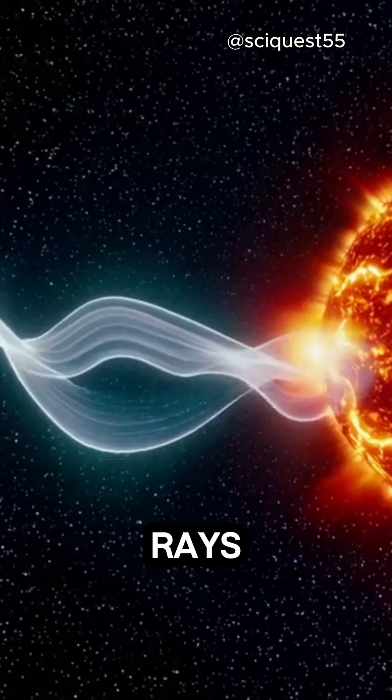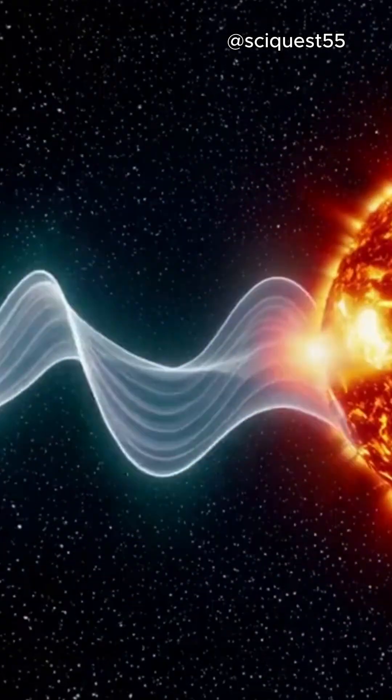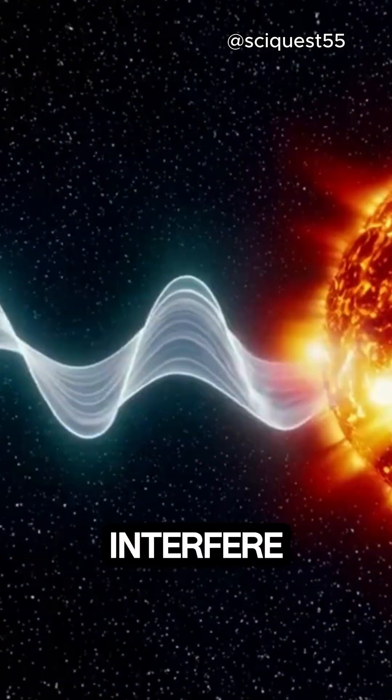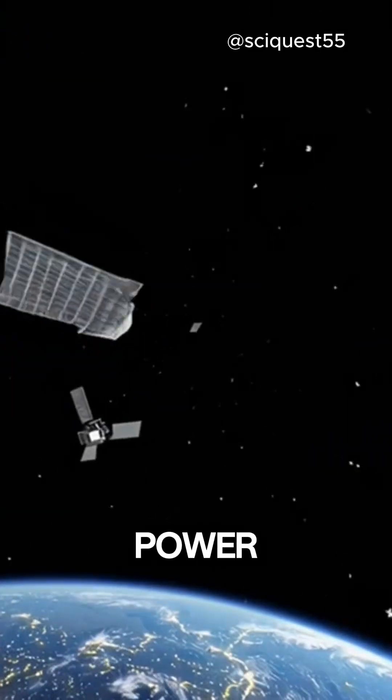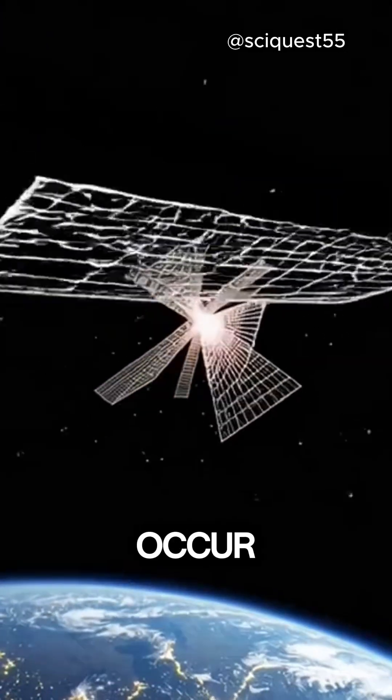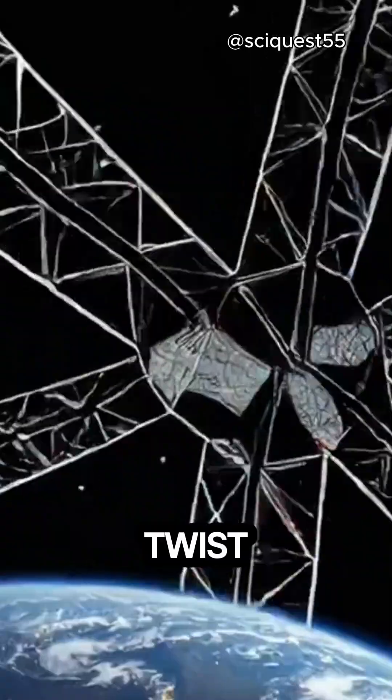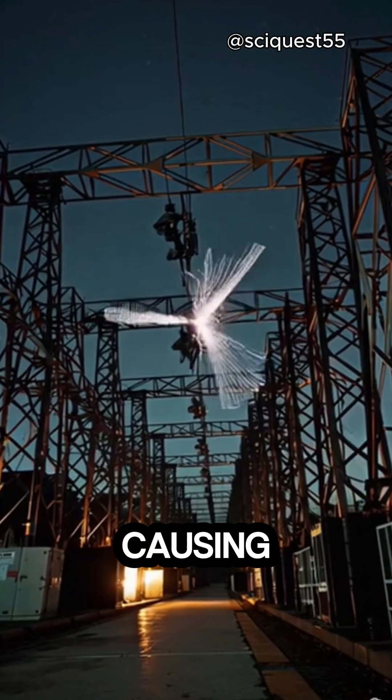These flares send X-rays and radio waves through space, and when they reach Earth, they can interfere with satellite communications, GPS signals, and even power grids. Solar flares occur when the Sun's magnetic field lines twist and reconnect, causing a burst of radiation.